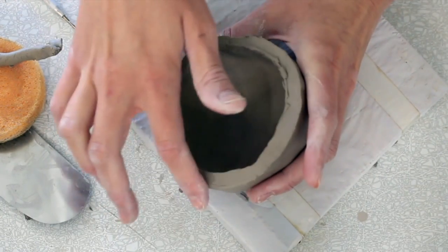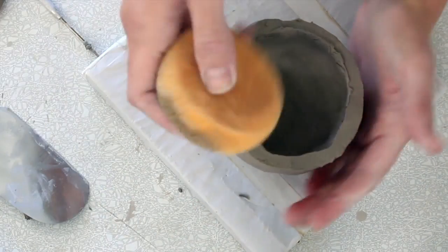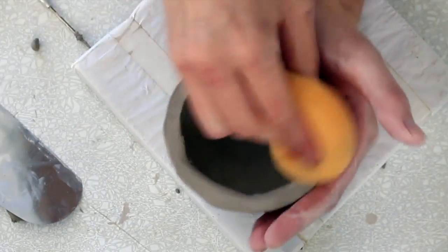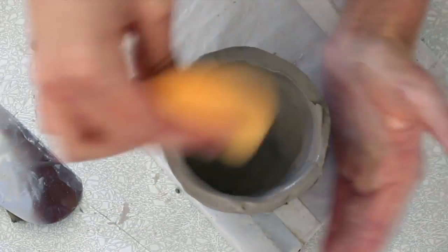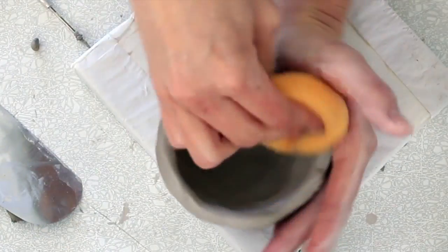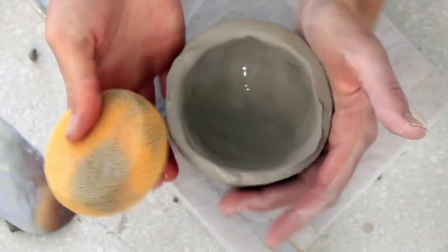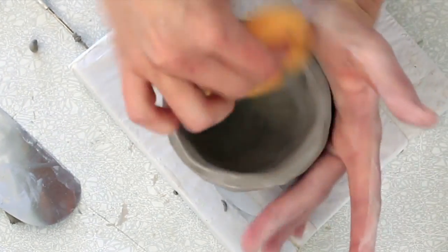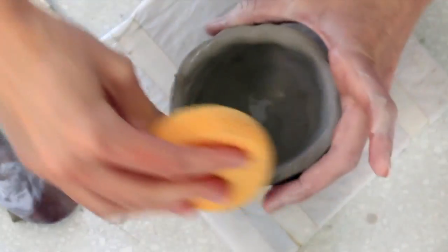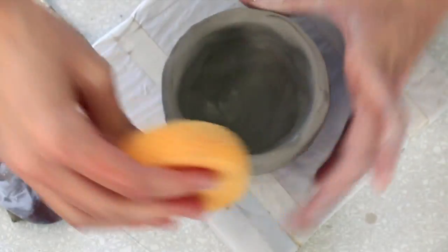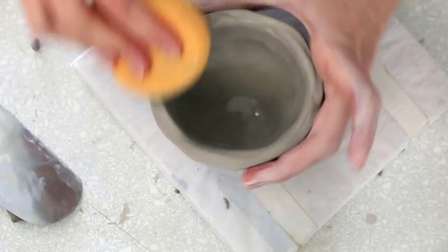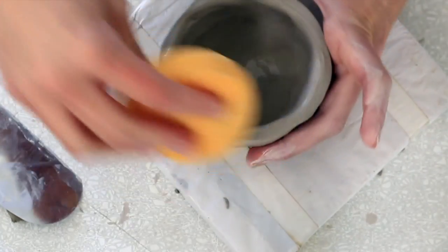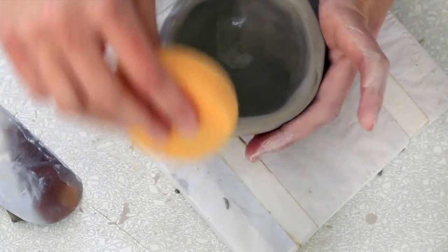It's sharp though. Once we bisque fire this, this would cut you. So what you need to do, again with your damp sponge, you can just kind of come through and smooth this out. So I'm just kind of rotating it around. But I'm supporting the outside edge with my hand. Why am I doing this? I'm doing this so that I don't distort the pot that I've just created. Remember we want these to kind of take the shape of a head.